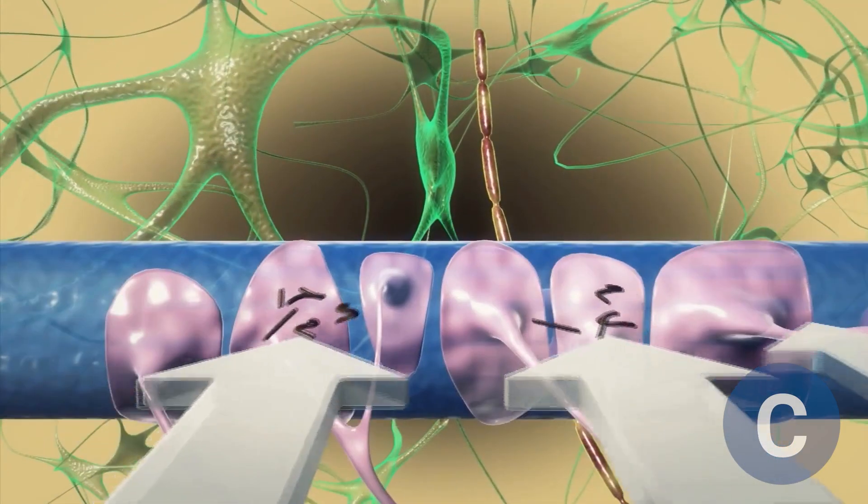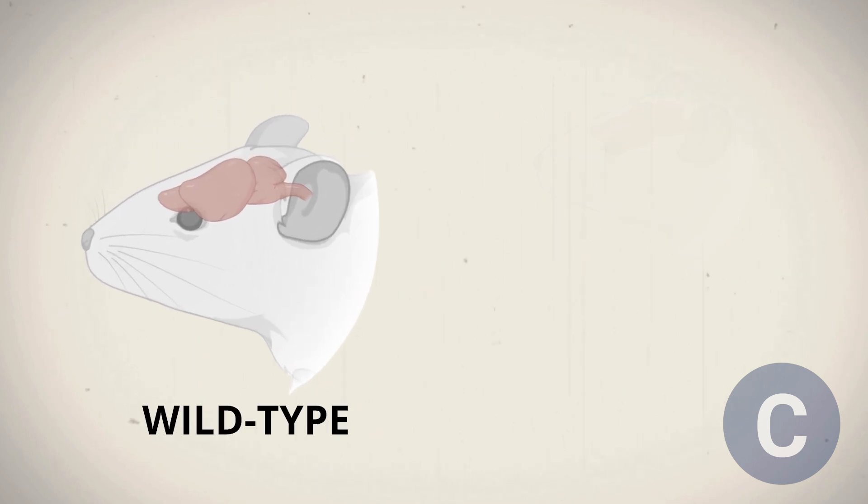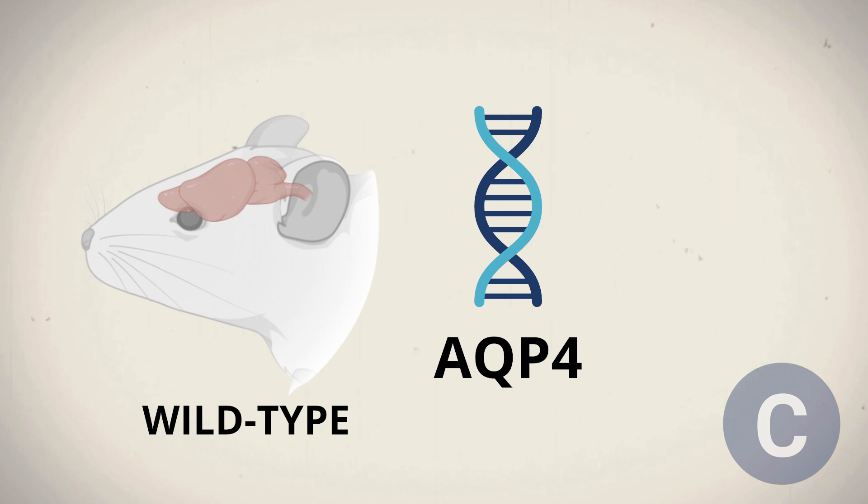To test this idea, the researchers compared two groups of mice to see if aquaporin-4 was essential for cerebrospinal fluid movement in the brain. The first group, called wild-type, consisted of mice with a functioning AQP-4 gene, so they could produce the aquaporin-4 protein.